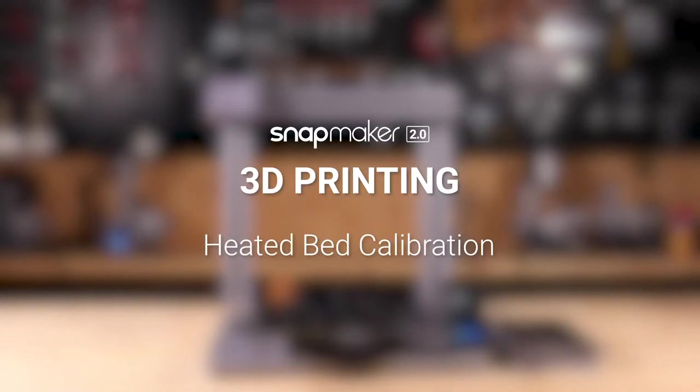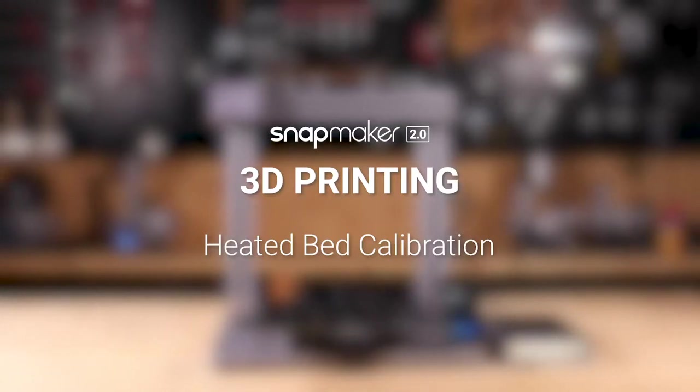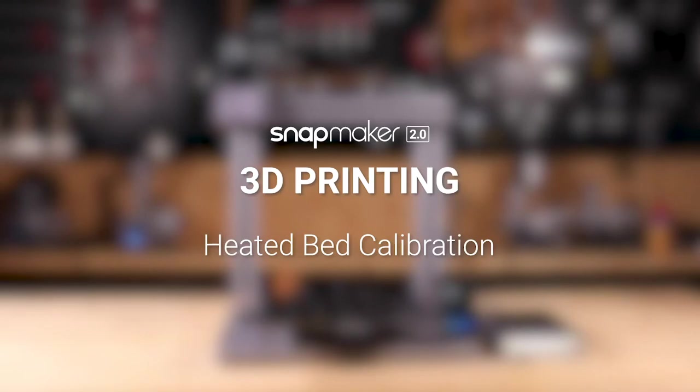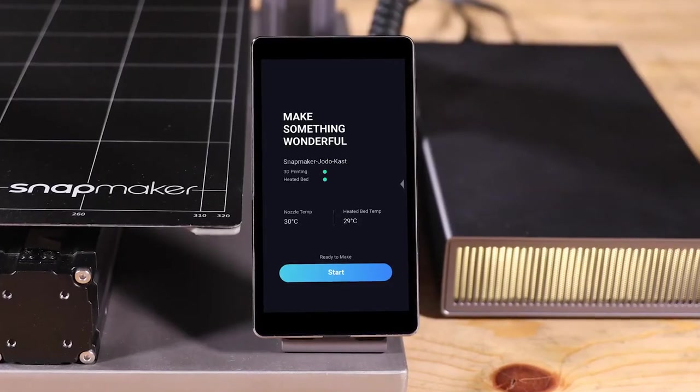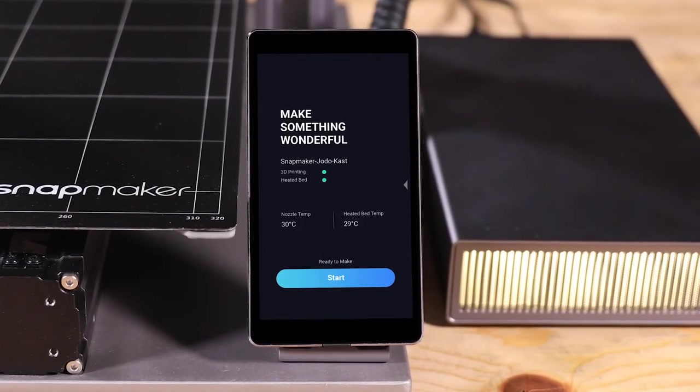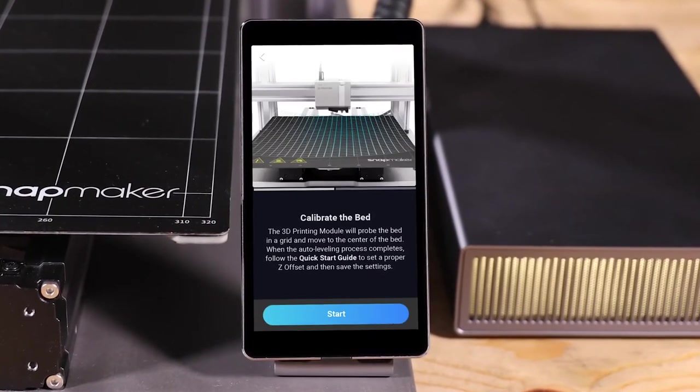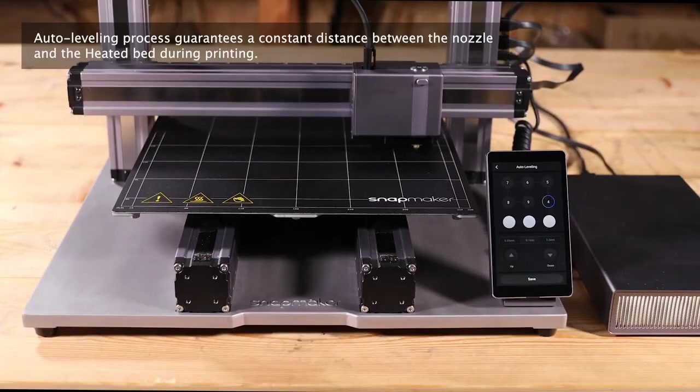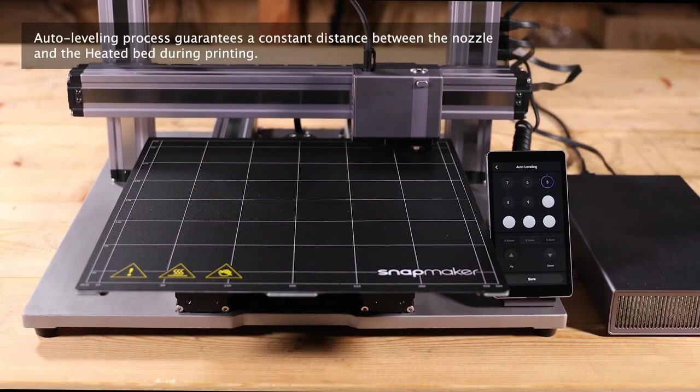Before your first printing, you need to calibrate the heated bed to ensure the print sticks to the bed properly. At the home page of the touch screen, swipe to the left and tap Calibration button. Tap Start and the machine will run an auto-leveling process.